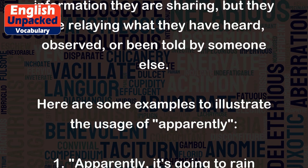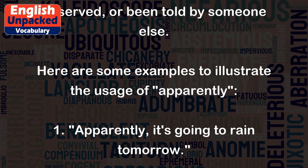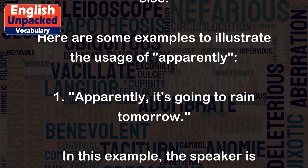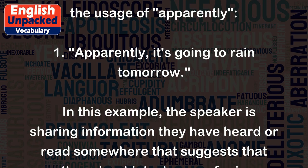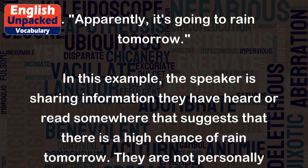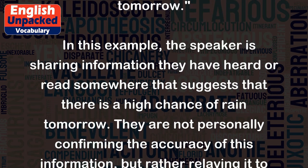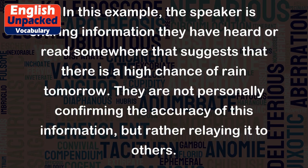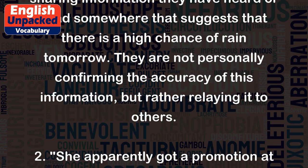Here are some examples to illustrate the usage of apparently. 1. Apparently, it's going to rain tomorrow. In this example, the speaker is sharing information they have heard or read somewhere that suggests there is a high chance of rain tomorrow. They are not personally confirming the accuracy of this information, but rather relaying it to others.